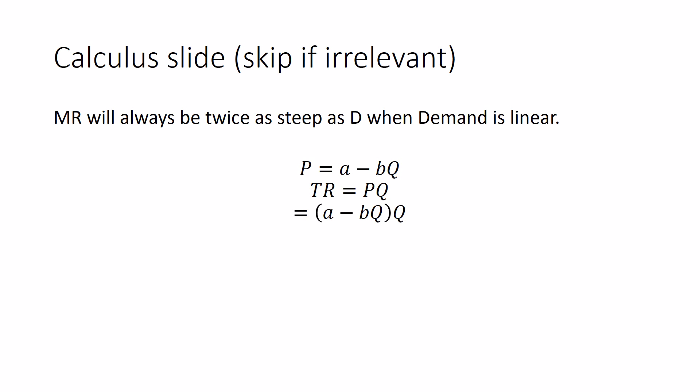Factor that Q through and you get AQ minus BQ squared. Well, marginal revenue is the change in total revenue or the change in quantity, which in calculus speak is the derivative of total revenue with respect to quantity. And in this case that's A minus 2BQ.